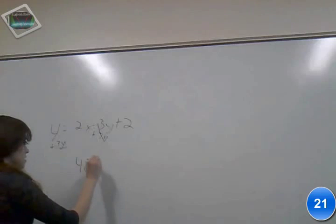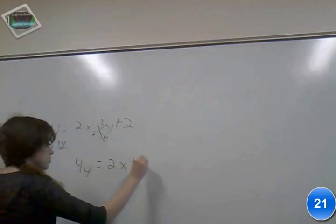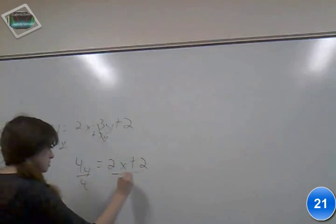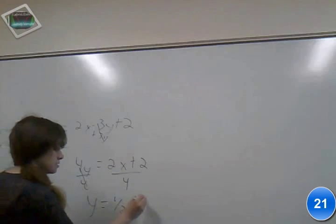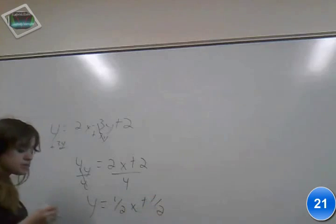And then you're going to take 4y is equal to 2x plus 2 divided by 4. And y is equal to 1 half x plus 1 half.